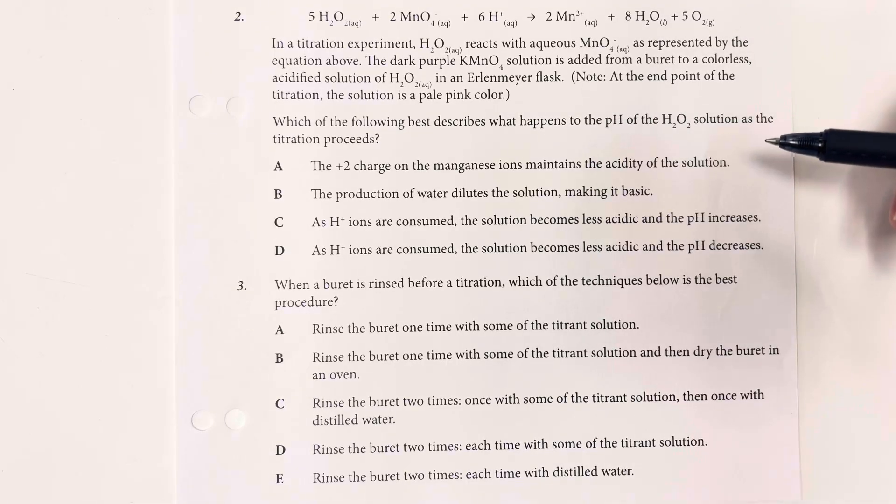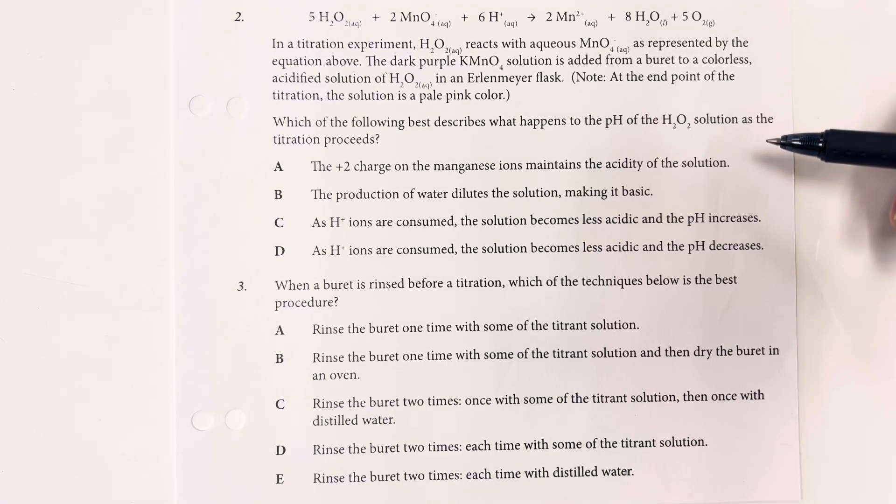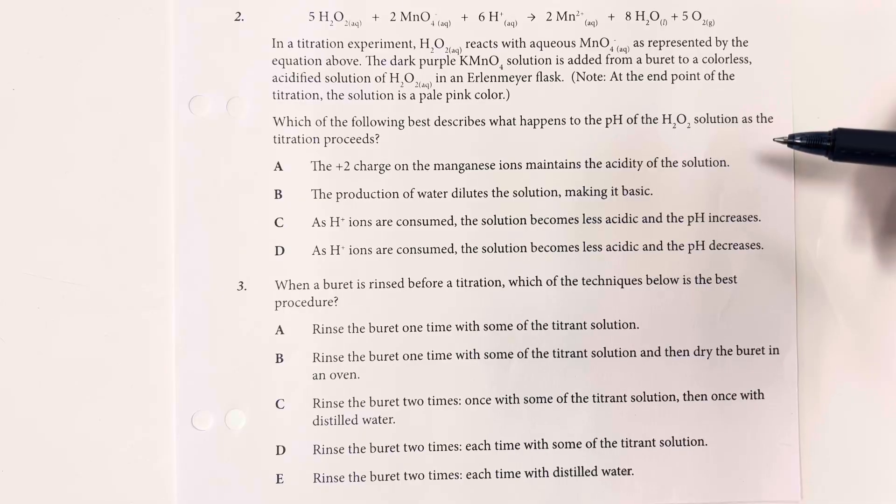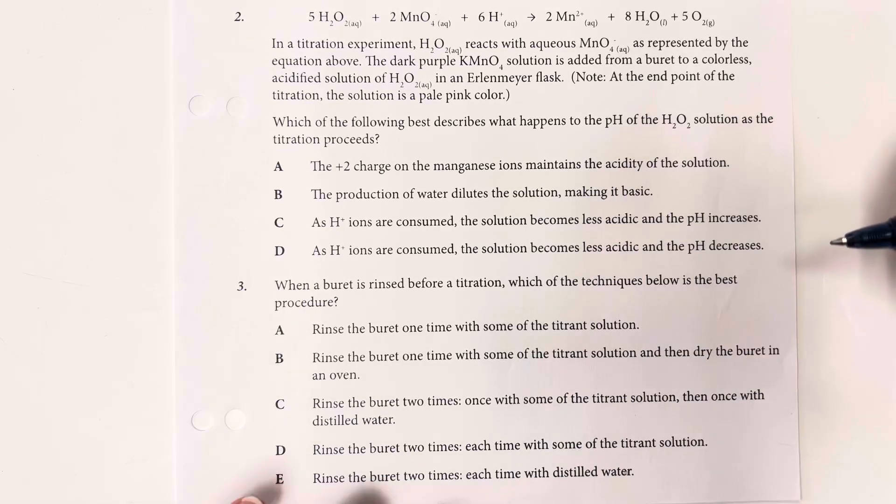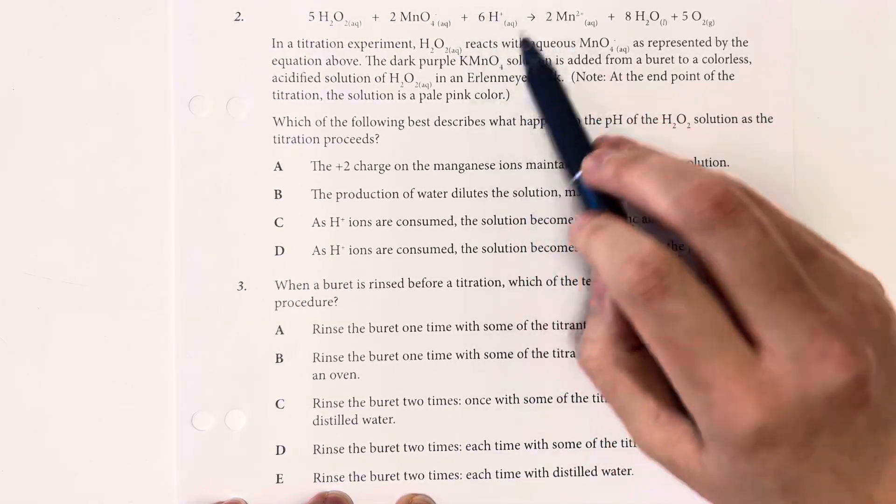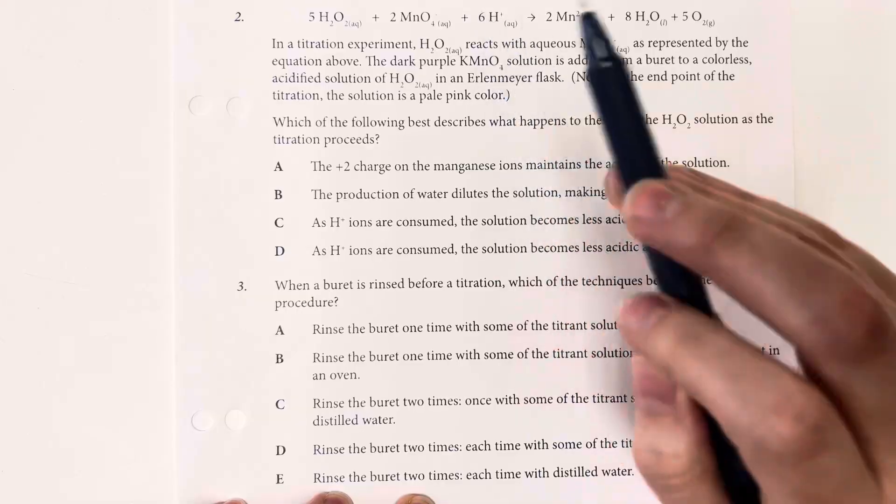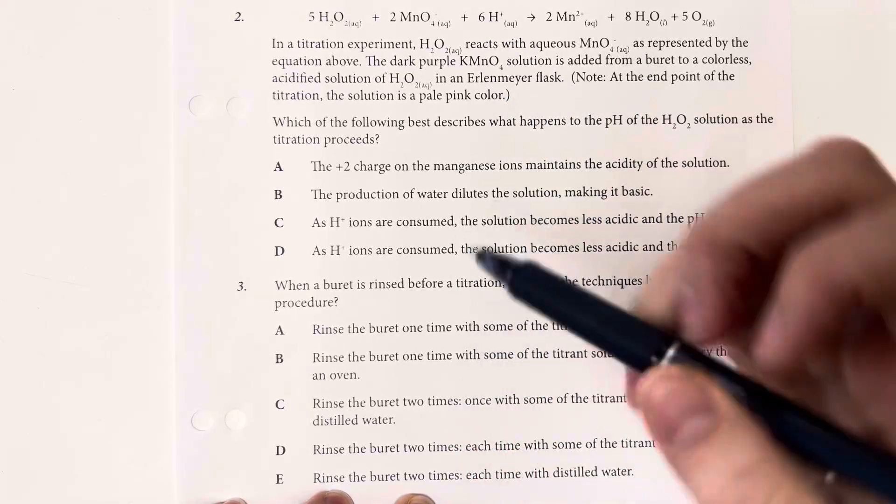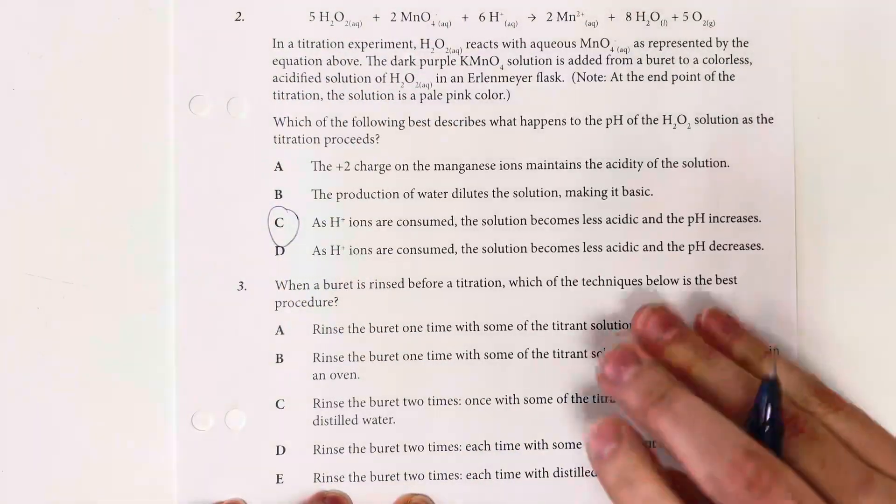and so we should become less acidic as the hydrogen ions are consumed, and therefore our pH should increase. So that is option choice C.